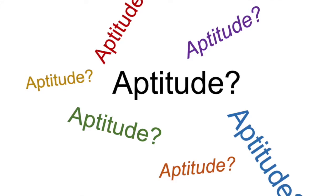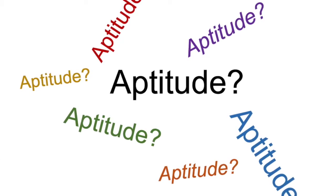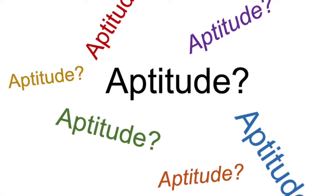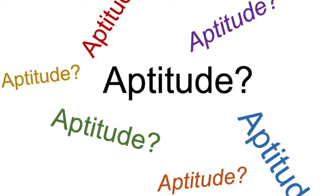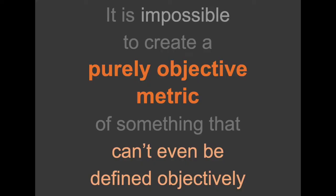Those who want to keep the SAT argue that while it is imperfect, it is an objective measure for comparing college applicants. I think that's a reasonable point, but only if they substitute the word objective with standardized. The SAT is supposed to measure aptitude, but aptitude itself is not well defined. Should it measure past success or future success? Should it measure success at school or success in life? Or should it measure the ability to learn? It is impossible to create a purely objective measure of something that cannot even be objectively defined. What the SAT provides is a standard way of comparing students from different high schools.